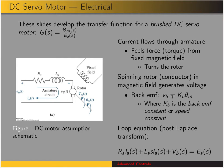We can take the Laplace transform of this system and get the loop equation. We have the armature resistance times armature current, plus armature inductance times S times armature current, plus back EMF — all equal to the applied voltage.